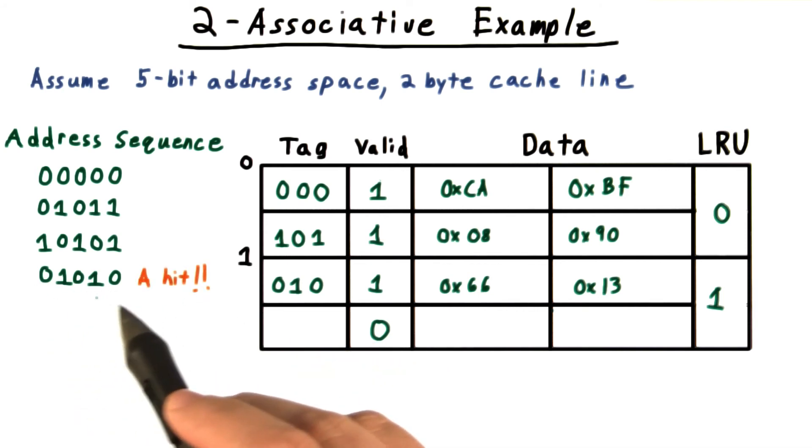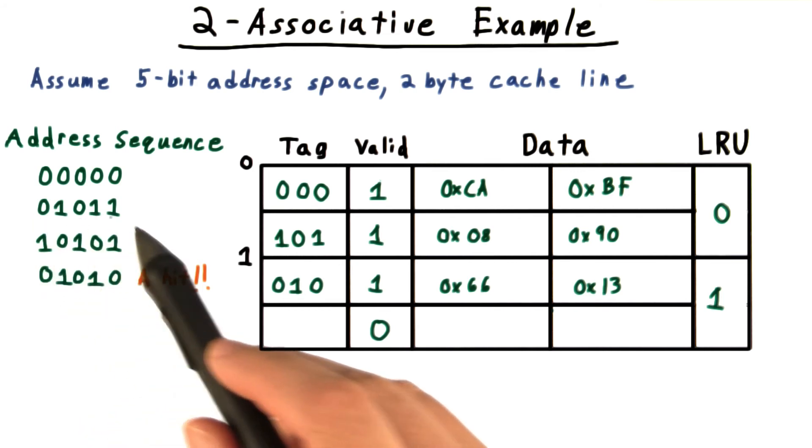Notice that this address is a hit, even though we didn't read the exact same address before, but we did read an address belonging to the same cache block.